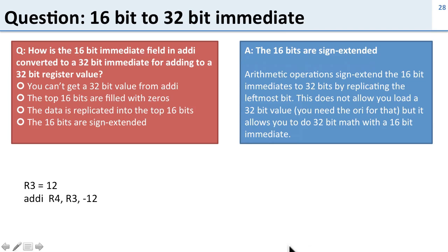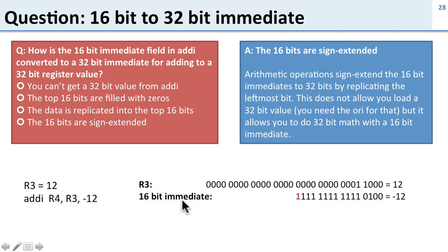Let's look at an example. R3 is 12, and we're going to do addi R4, R3, -12. Here's R3, it's 32-bits with the value 12. Here's our 16-bit immediate from the instruction, which is -12. You'll notice the left-most bit is a 1, so when we sign-extend it, we end up with 1's going all the way across. So now here's our 32-bit sign-extended value.